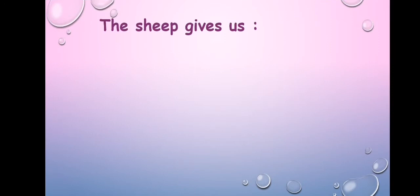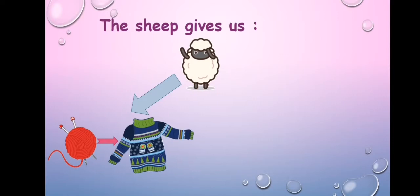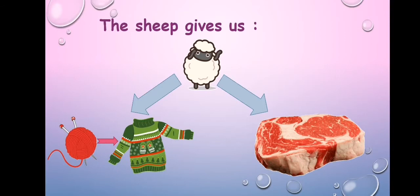The sheep gives us wool. We can make cloth from wool. Also the sheep gives us meat. So the sheep gives us wool and meat.